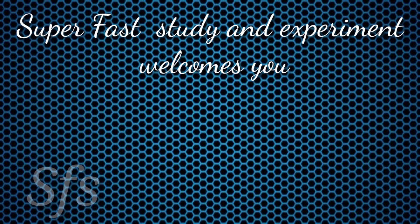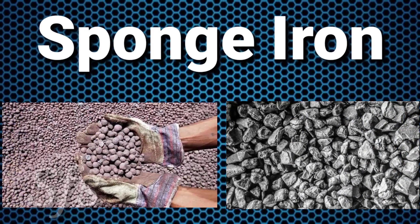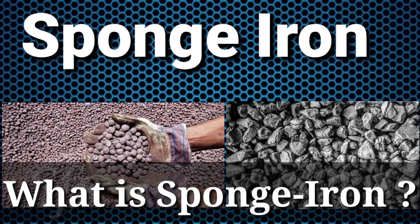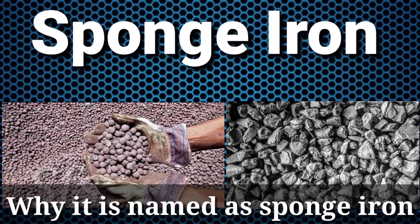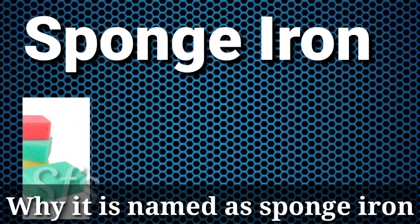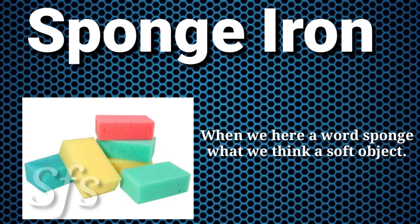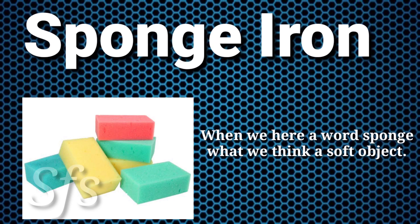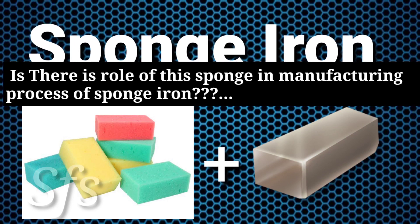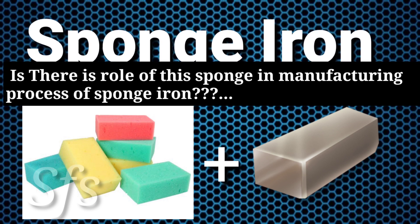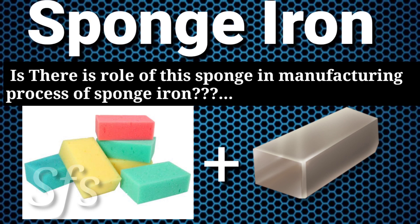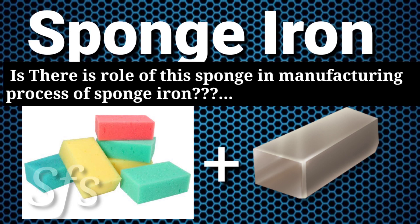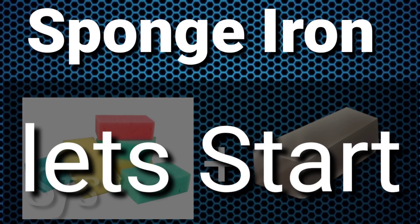In this video we discuss about sponge iron — what it is and why it is named sponge iron. When we hear the word 'sponge' we think of a soft, spongy object used in furniture and for washing vehicles. Is there a role of this sponge in the manufacturing process of sponge iron, or not? This is a big question. So let's start our video.